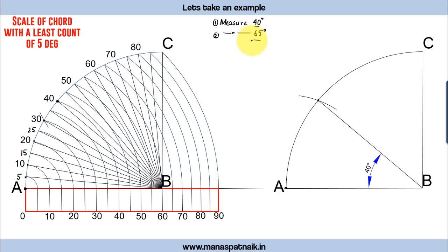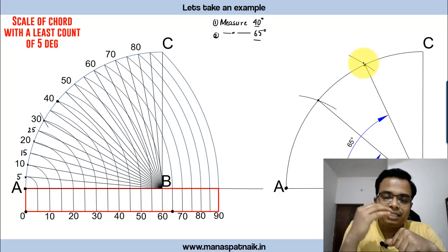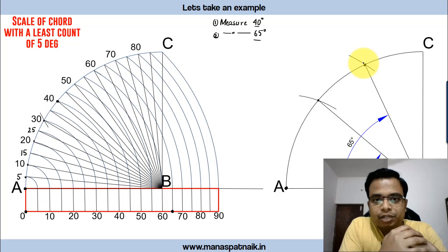For 65 degrees, the chord lies between the 60 and 70 marks. Place both legs of your compass from zero to the 65-degree mark on the scale to set the chord length. Then with A as center, cut an arc using that length. The intersection point gives you the 65-degree angle, as verified by measurement.